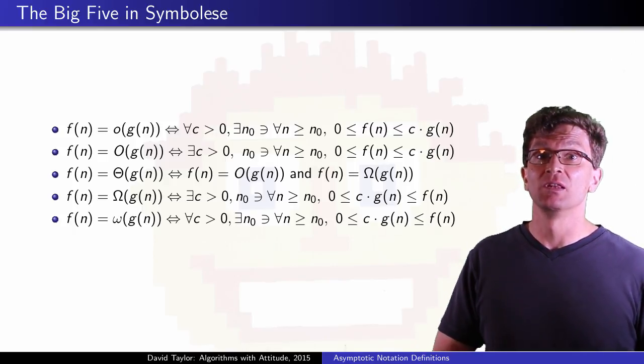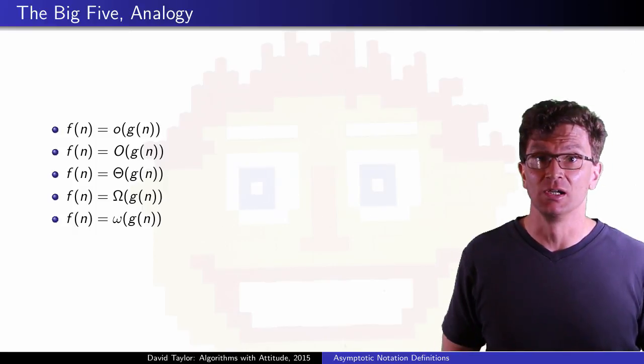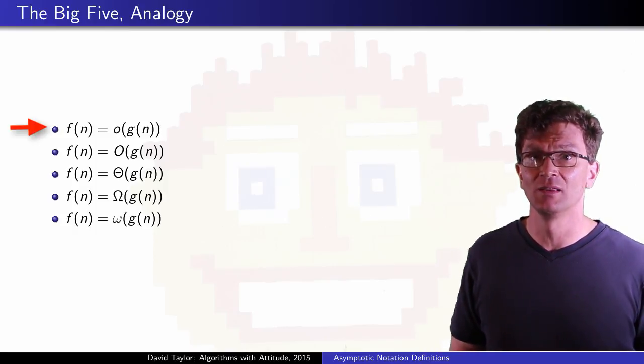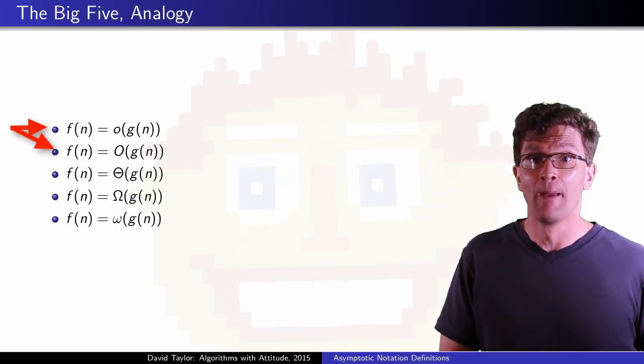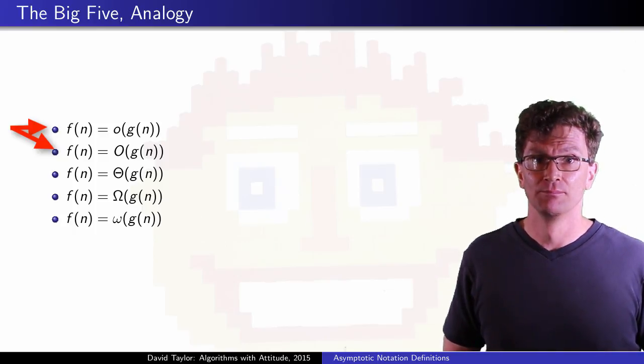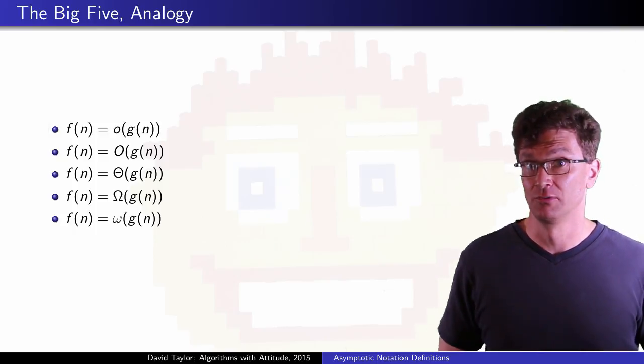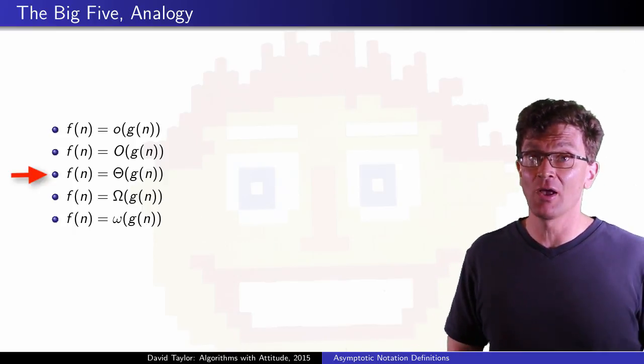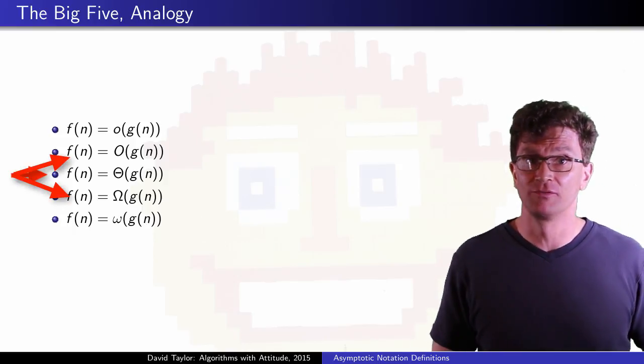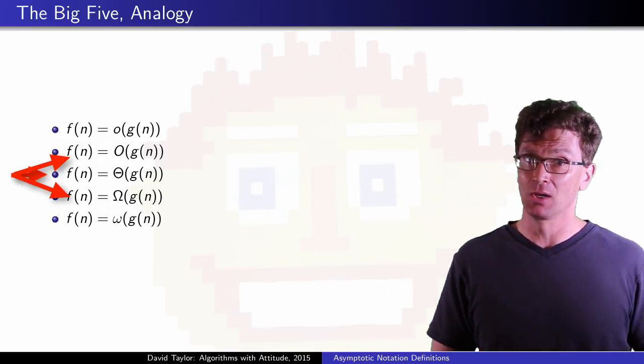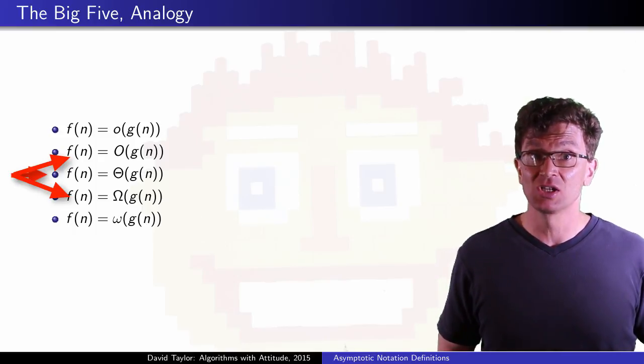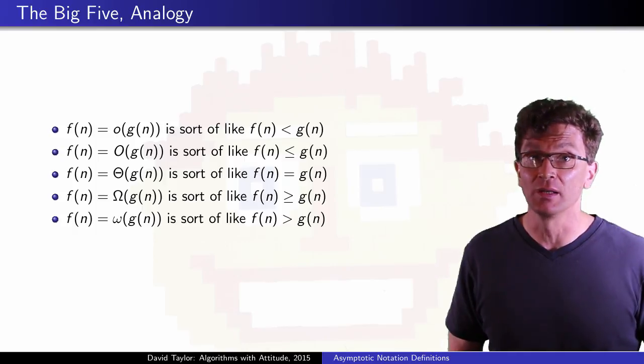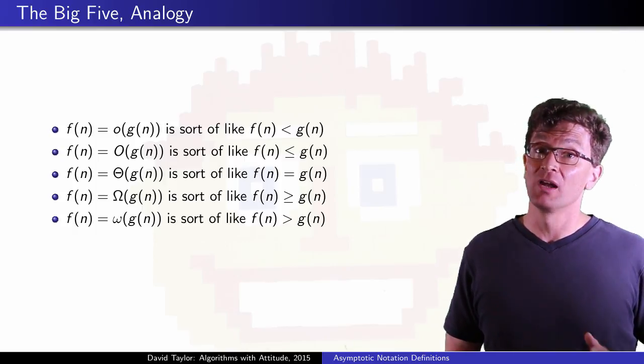The reason I put them in this order is because there is some analogy here. If f(n) is in little o of g(n), then f(n) is also in big O of g(n), but it's not in any of the others. If f(n) is in theta of g(n), then it's also in big omega and big O of g(n), but not in little omega or little o. This relation looks kind of like inequalities, which explains why there are five of them.